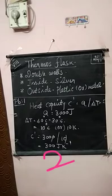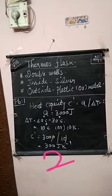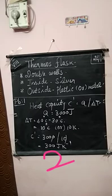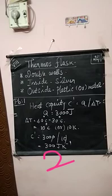The thermos flask is used to keep its contents — whether hot or cool — at a temperature different from the surroundings for a longer time. Whatever temperature the hot coffee is at when placed inside, it maintains that same temperature for a long time. The thermos flask has double walls.